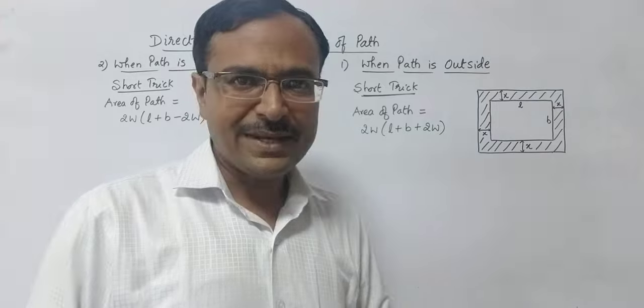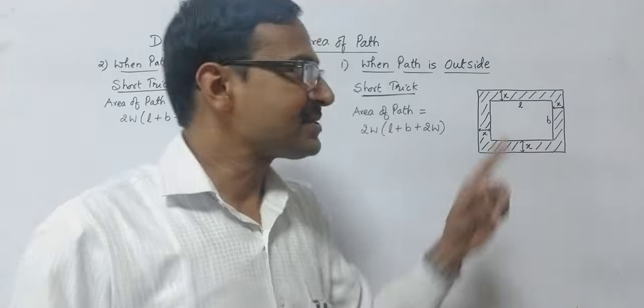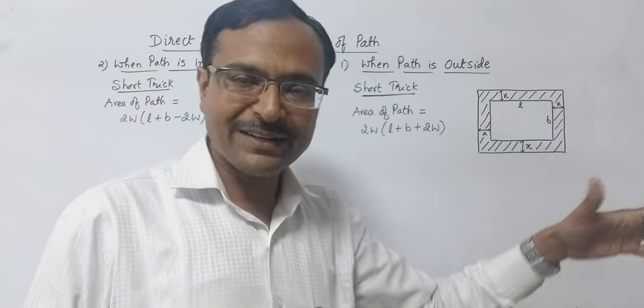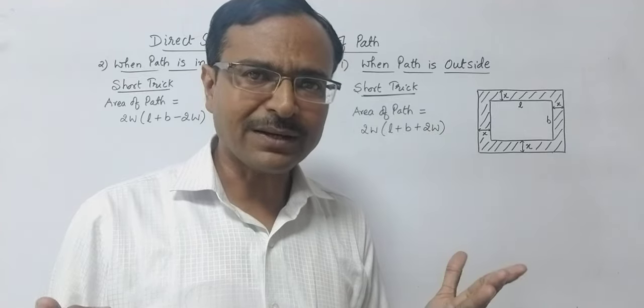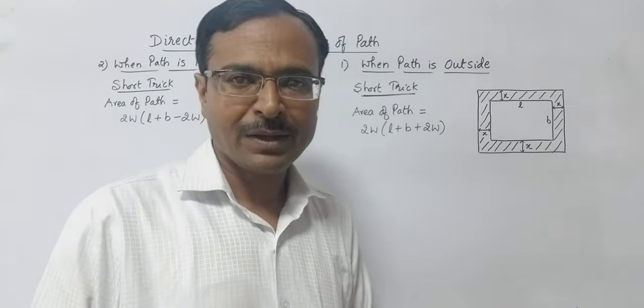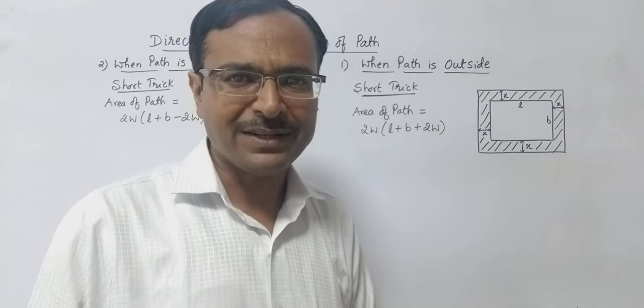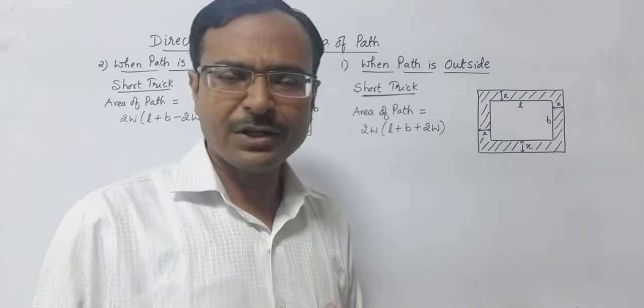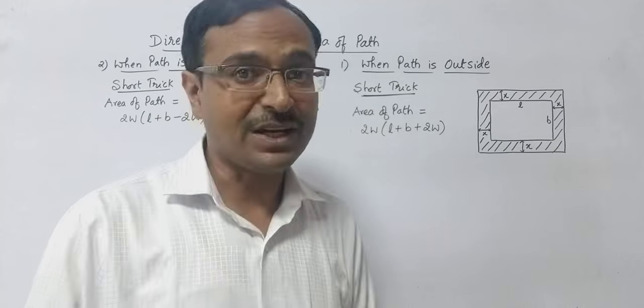Obviously the process is very easy. You need to find the outer dimensions, the outer length and the outer breadth, and then subtract the inner area from the outer area to get the area of the path. But that consumes a lot of time. Even if you consume 30 to 40 seconds in solving this question, it is quite a lot.